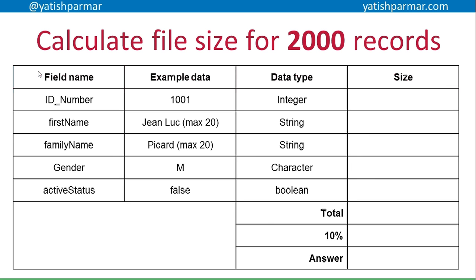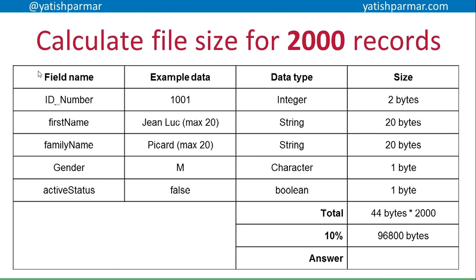Here are the data types I identified: the ID number is an integer, first name is a string with maximum 20 characters, family name is a string, gender is a character, and active status is a boolean — true or false. The integer is two bytes; using ASCII, one byte per character gives 20 bytes each for first name and family name; one byte for the character field for gender; and one byte for the boolean. The total per record is 44 bytes. Multiplied by 2,000 records, plus 10% overhead, gives 96,800 bytes additional. Dividing the total by 1,024 gives approximately 94 KB for the file size.